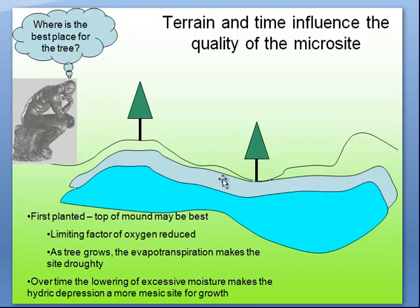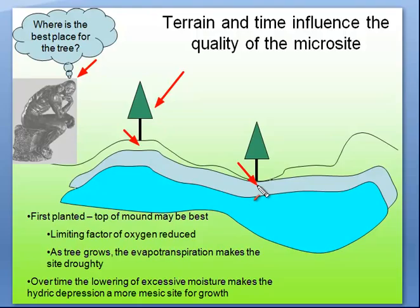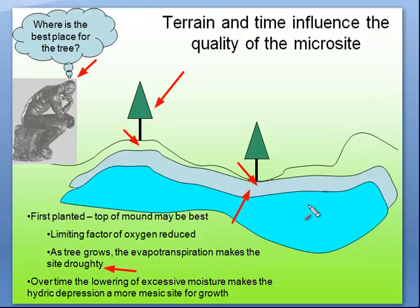If you had a low spot and a high spot, when trees are little the slightly elevated microsite is ideal because it's a little drier and not too wet. The hydric low site is very moist, making it a limiting factor for growth. But as trees grow, evapotranspiration makes the site droughty, and over time the lowering of excessive moisture makes the hydric depression a more mesic site for growth. The root systems act like water pumps, lowering moisture underneath the soil — trees can influence the moisture content of the area dramatically.